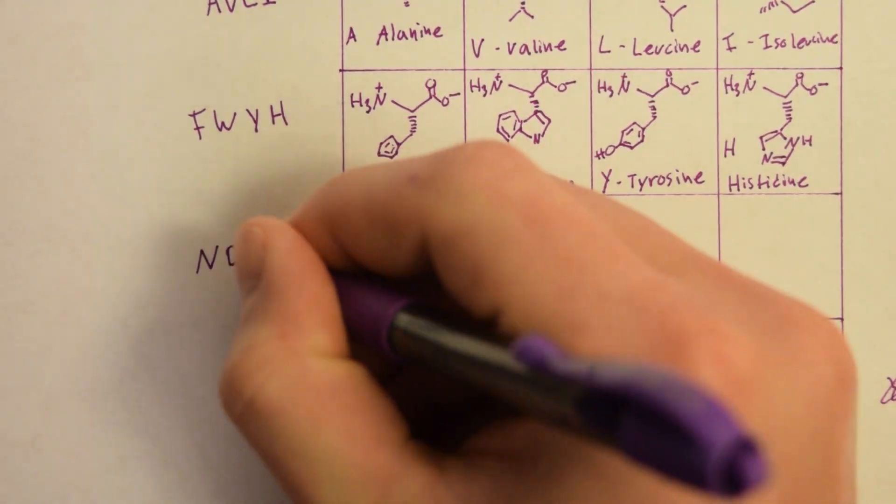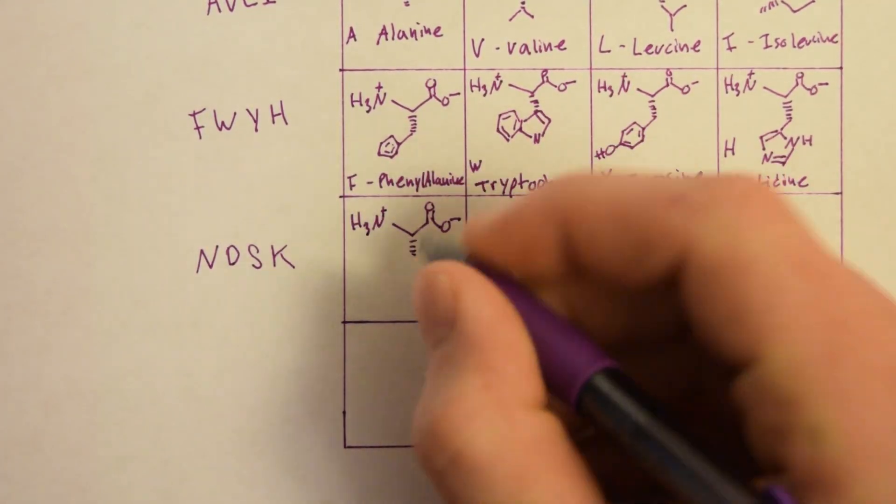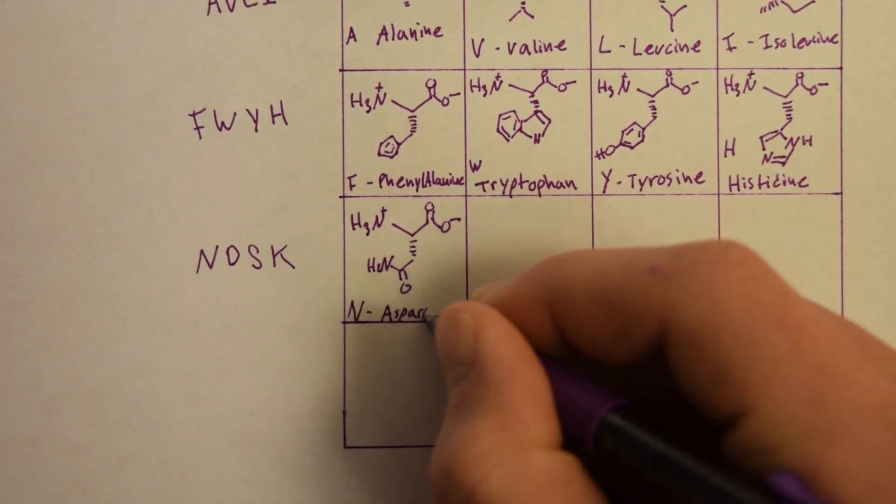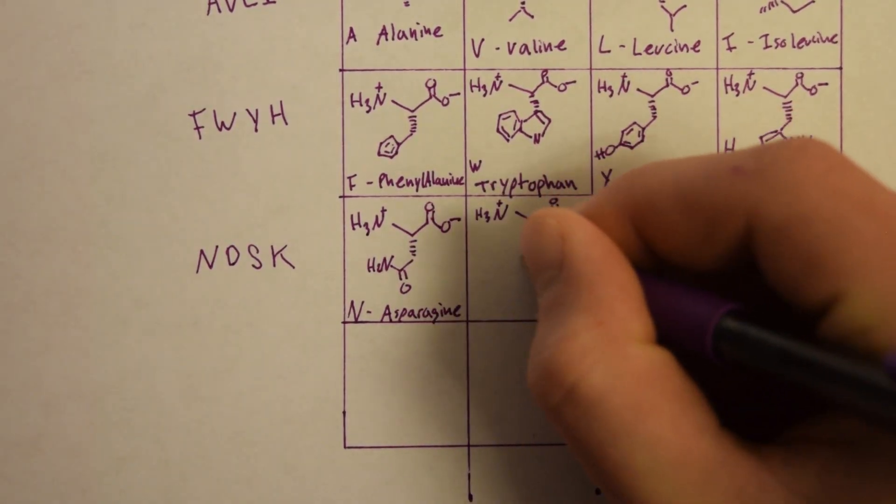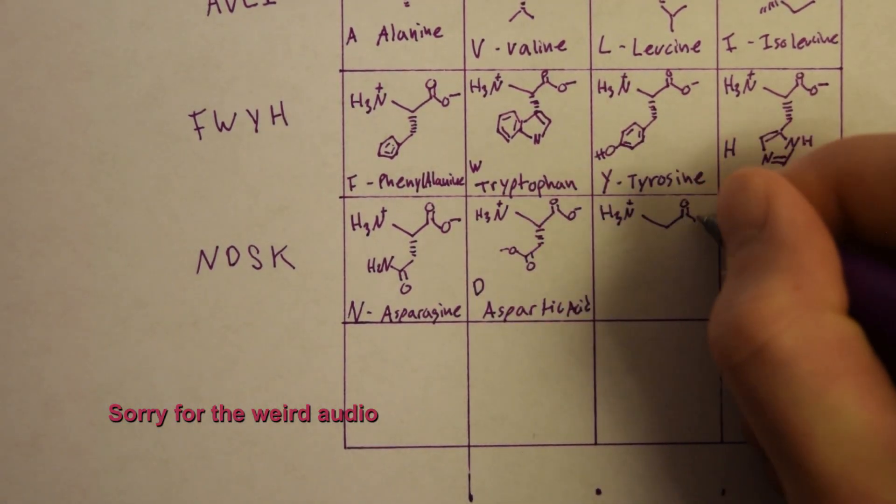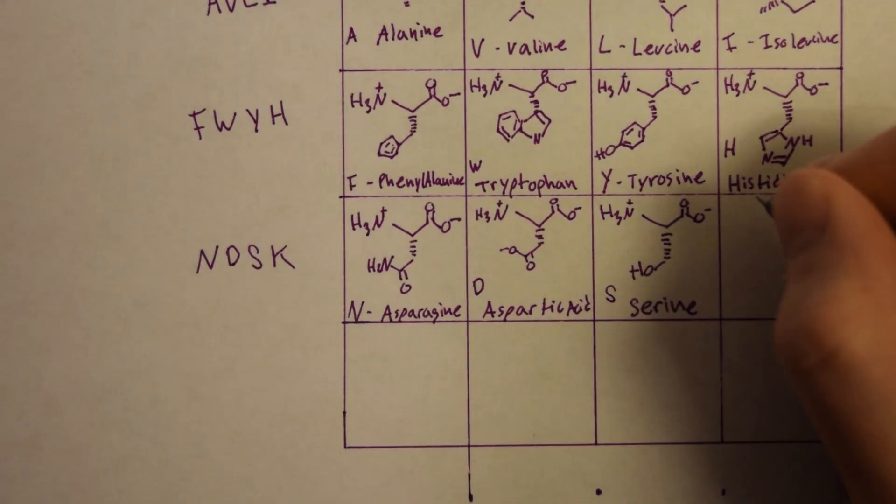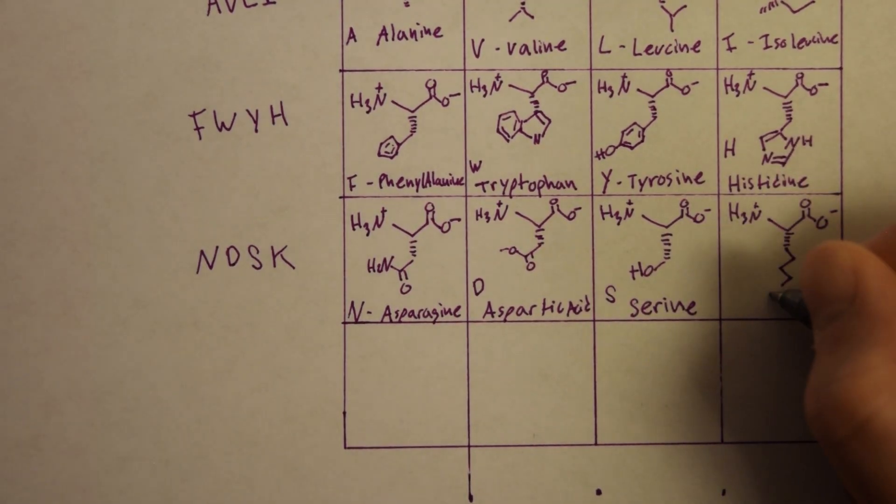Next line is NDSK. Asparagine has an amide functional group. Aspartic acid is the same thing but has a carboxyl group. Serine has an ethanol group. Lysine has a four-carbon long amine group.